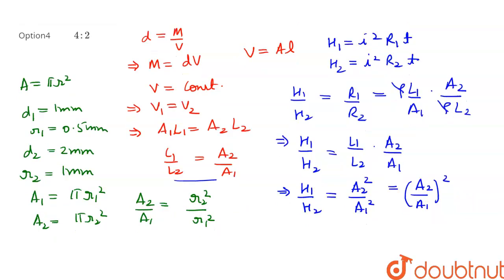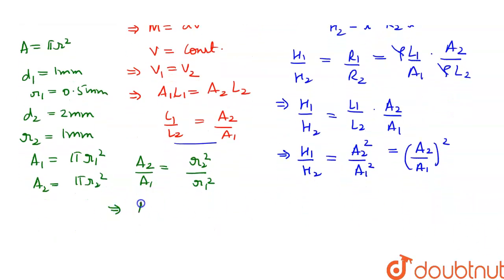Let's substitute the value of r₁ and r₂ in this equation. This will give us A₂/A₁ = r₂ is 1 so 1² divided by r₁ is 0.5 so 0.5² and we get A₂/A₁ = 4.